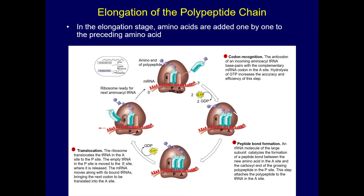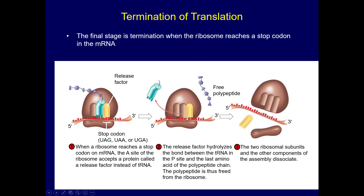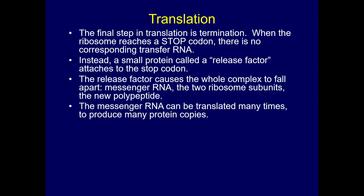During the elongation stage of translation, amino acids are added one by one to the preceding amino acid based on the codon code. The final stage is termination — we reach the stop codon, which signals that the protein is done. The ribosome reaches the stop codon, and since there's no corresponding transfer RNA, a small protein called a release factor attaches to the stop codon and allows the polypeptide to leave.